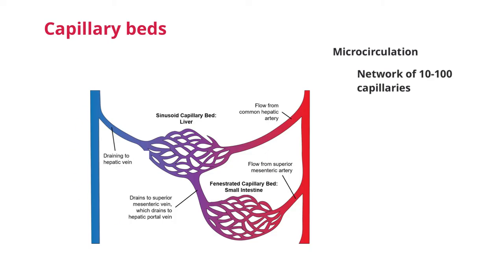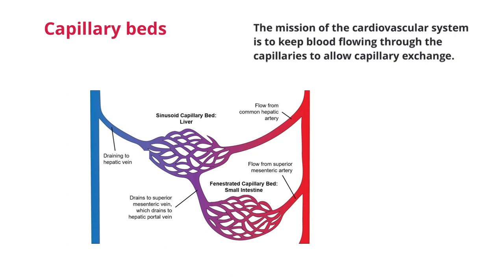Capillaries are the smallest blood vessels and are unique in that they allow exchange of fluid or substances depending on their type. Arterial blood flows and gets smaller and smaller, ending up in the capillary beds and then going back out for venous return. The mission of the cardiovascular system is to keep blood flowing through these capillaries to allow for capillary exchange.